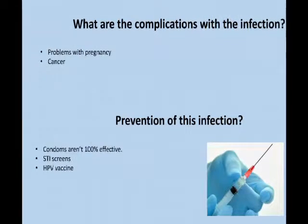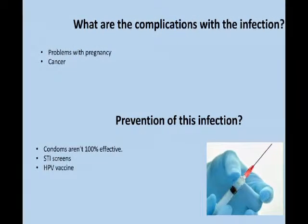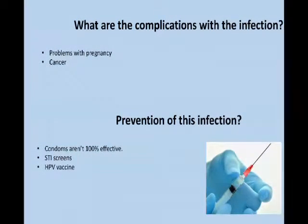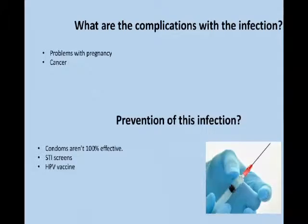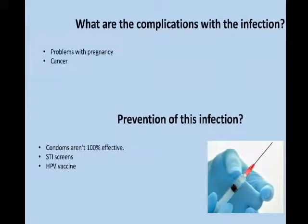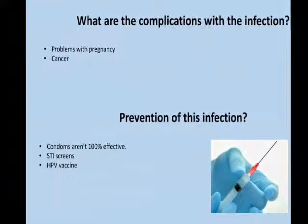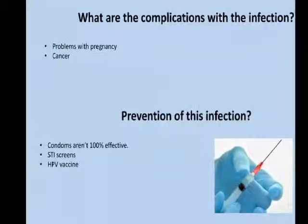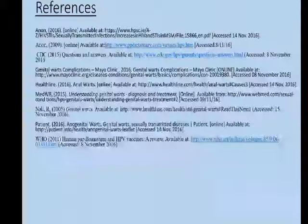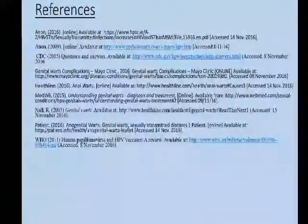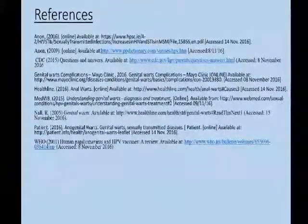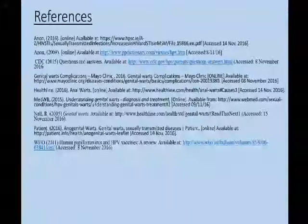To prevent this infection, condoms can be used, however they aren't 100% effective. The best method is to have an STI screen and to have regular checks. Also, there is an HPV vaccination, which is 3 shots over a period of 6 months. This protects against types 6, 11, 16, and 18 — the main cause of warts and lesions.